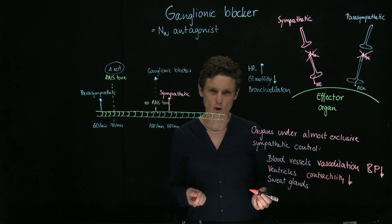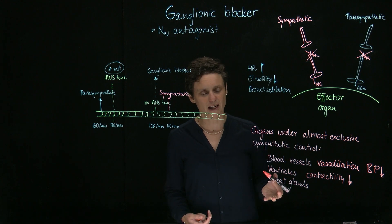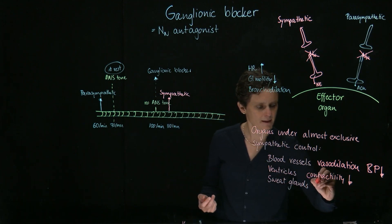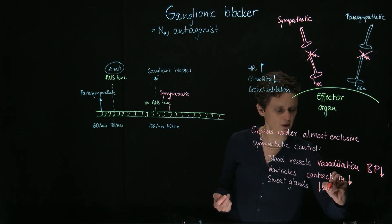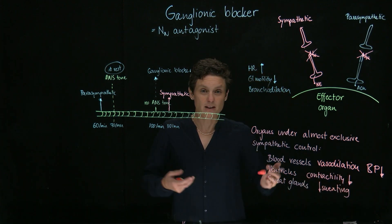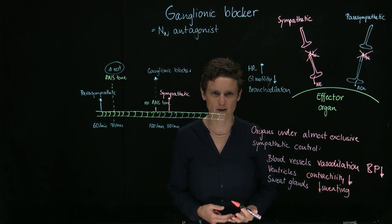Sweat glands are also exclusively under sympathetic control. Therefore, if you block it, you're going to decrease sweating. So there is a decrease in sweating, or we call this anhydrosis. These are all effects of the ganglionic blockers.